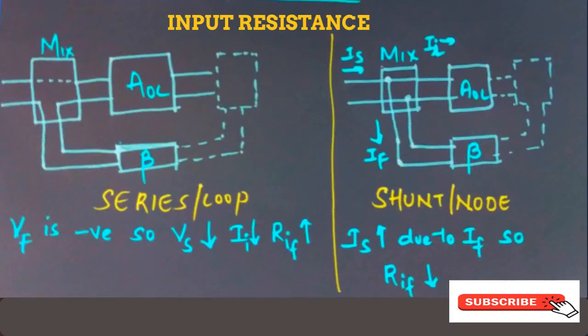The input resistance of a feedback amplifier in series or loop mixing increases because the feedback voltage opposes the source voltage, causing the current to decrease and thus the input resistance to increase. Whereas in shunt or node mixing, the feedback current adds to the source current, increasing the total current, which causes the input resistance to decrease.